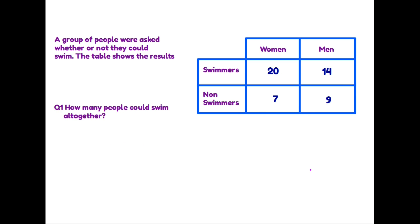Another question might be something like how many more women than men can swim? So now we are looking across the row of swimmers and it tells us that 20 women can swim, 14 men can swim. So to find out how many more, 20 minus 14, you would get the answer 6.